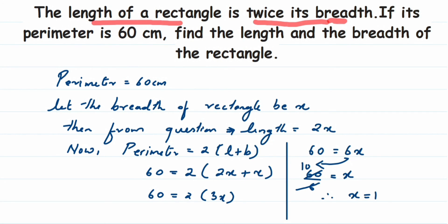We can cancel — 6 tens are 60 — so therefore x is equal to 10. If x equals 10, that means breadth is nothing but 10. Then length will be twice of 10, which is 2 into 10, which is 20 centimeters.